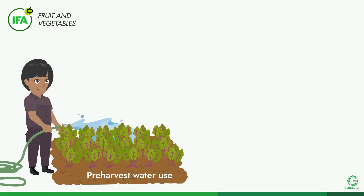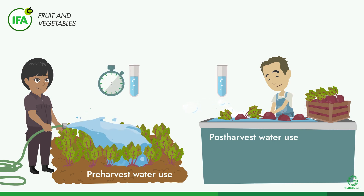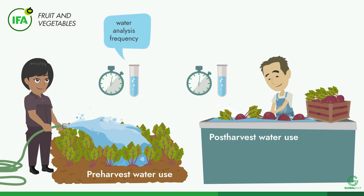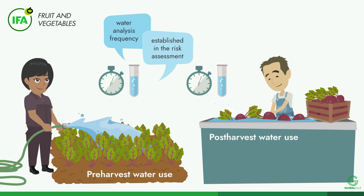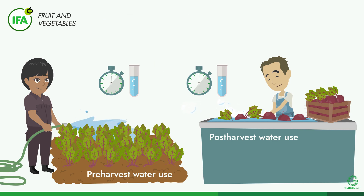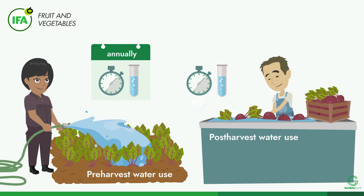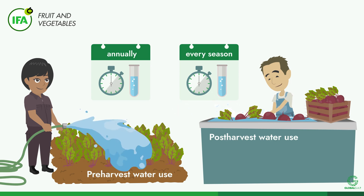For fruit and vegetables, water used for pre-harvest and post-harvest activities must be analyzed. A water analysis frequency must be established in the risk assessment and must be aligned with current sector-specific standards or relevant regulations. Pre-harvest water must be analyzed at least annually, and post-harvest water that comes into contact with the product must be analyzed at least once per season or more frequently if required by the risk assessment.